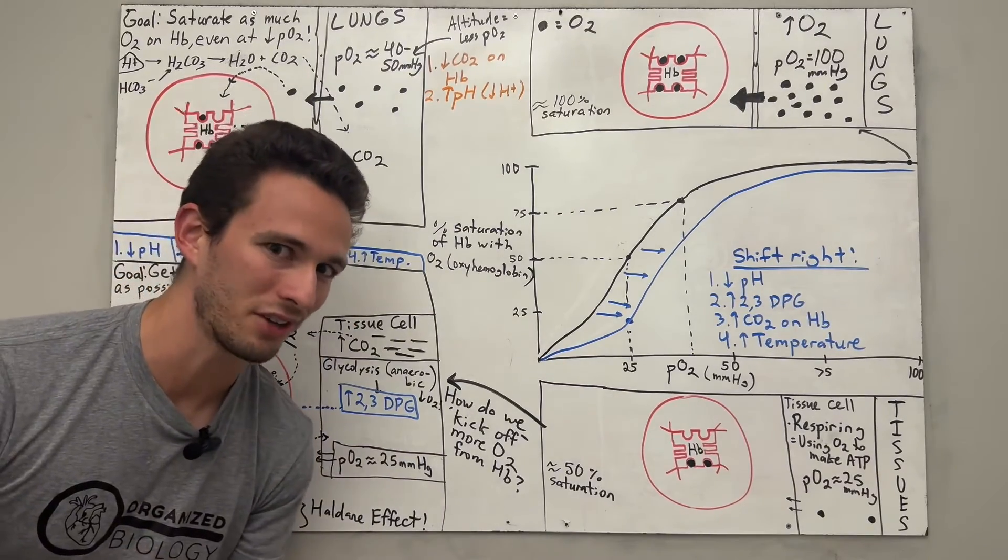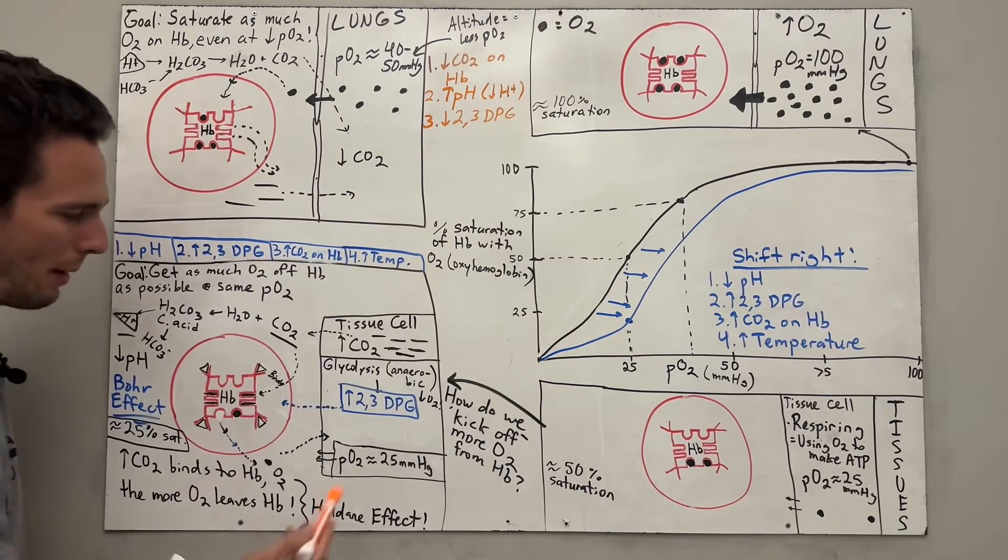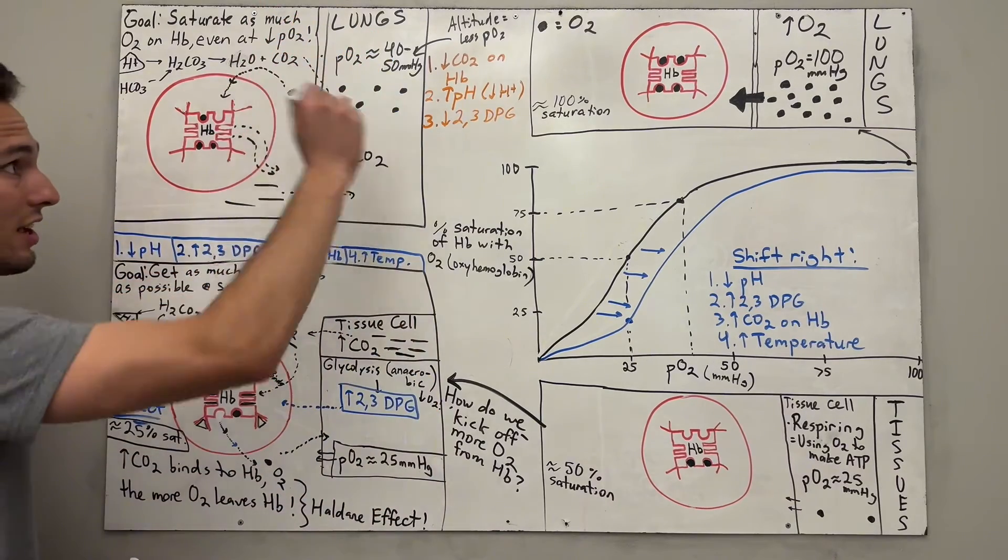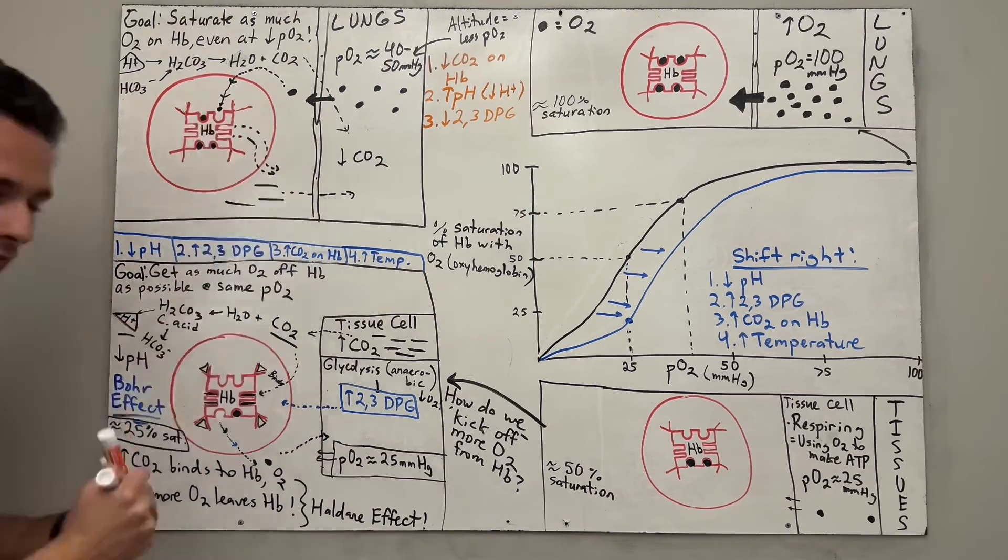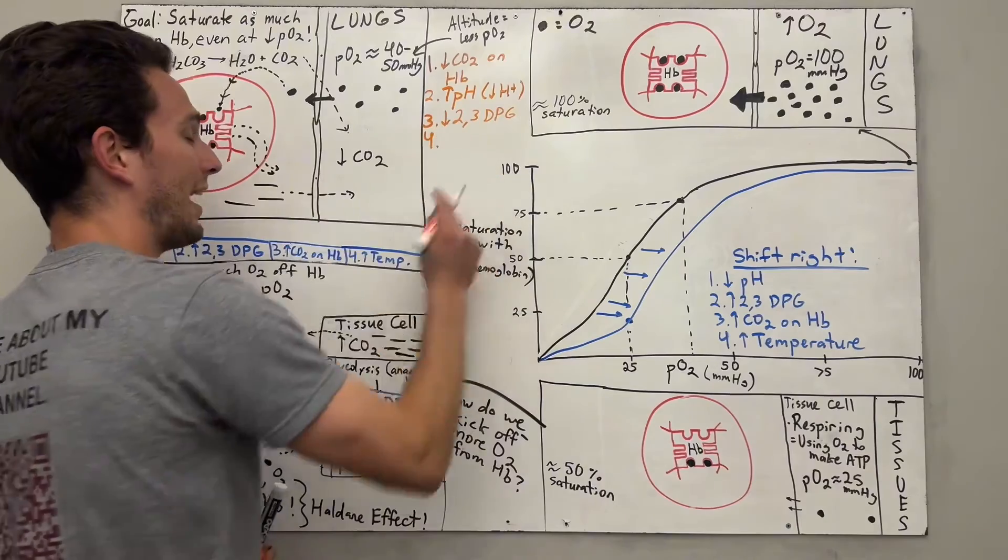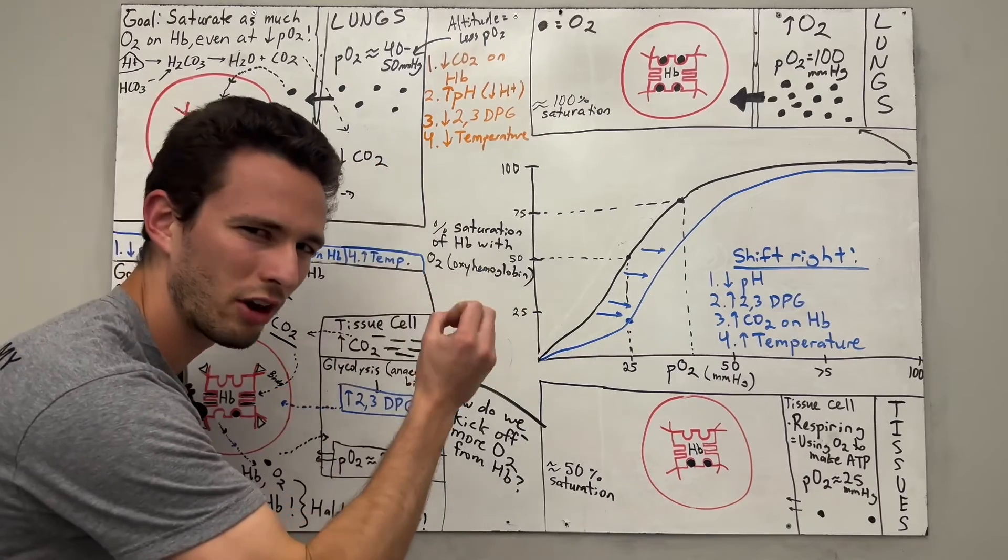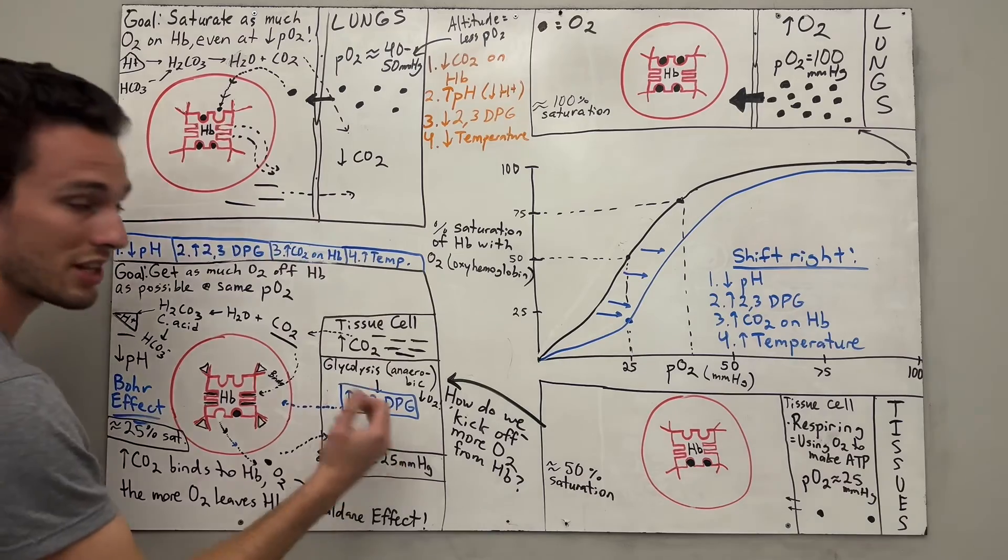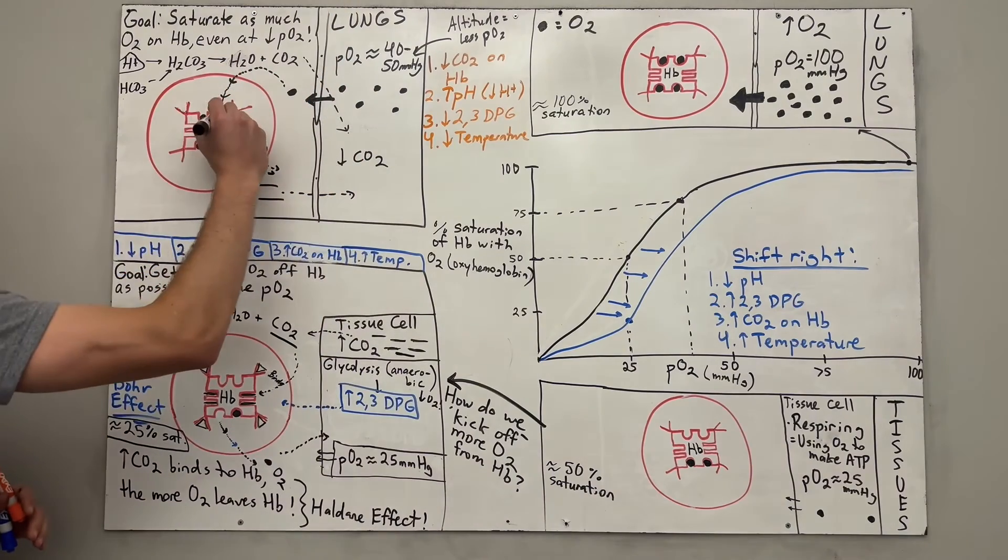The two other things you can probably predict are as follows. The first one being there's going to be very low 2,3-DPG, because remember, this was produced when there was a lack of oxygen, but now we've got plenty of oxygen in this region. So therefore, there's going to be hardly any of that further cementing that we're going to get that oxygen on hemoglobin. And finally, temperature. At the lungs, it's going to be a relatively decreased amount of temperature. And that's simply because air is usually cooler than our bodies. And furthermore, the cells on the lining of the lungs aren't doing as much respiration as those at the tissues. So there's going to be a lot lower temperature at the lungs themselves. So that finally makes us saturate full, pretty full at least, hemoglobin with our oxygen.